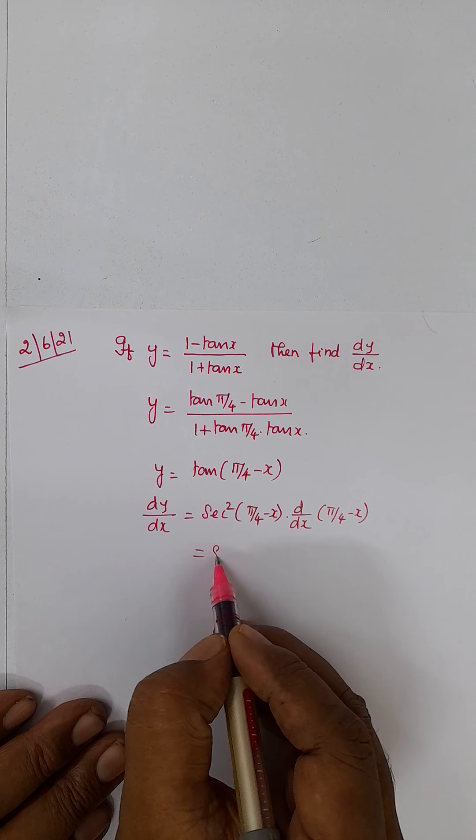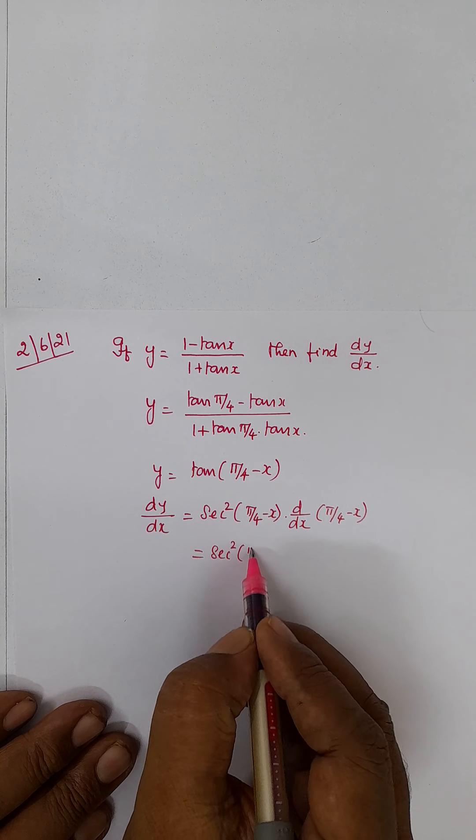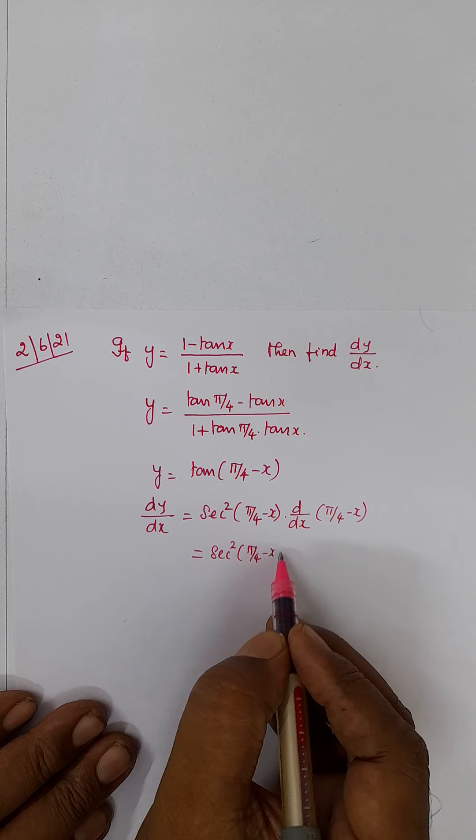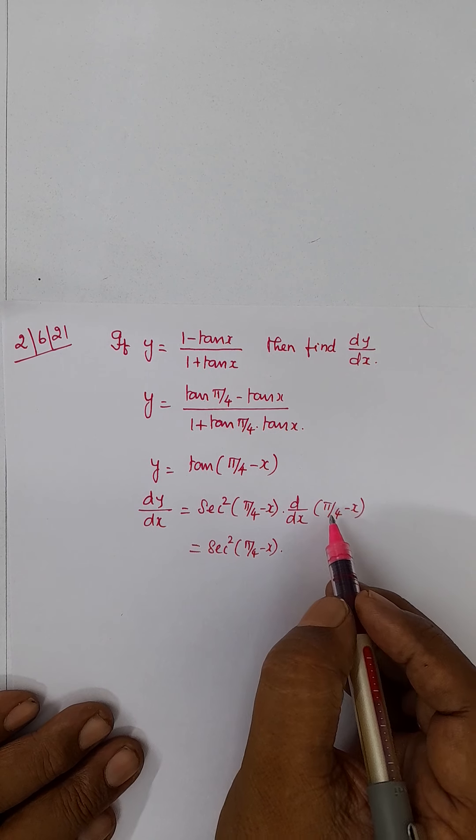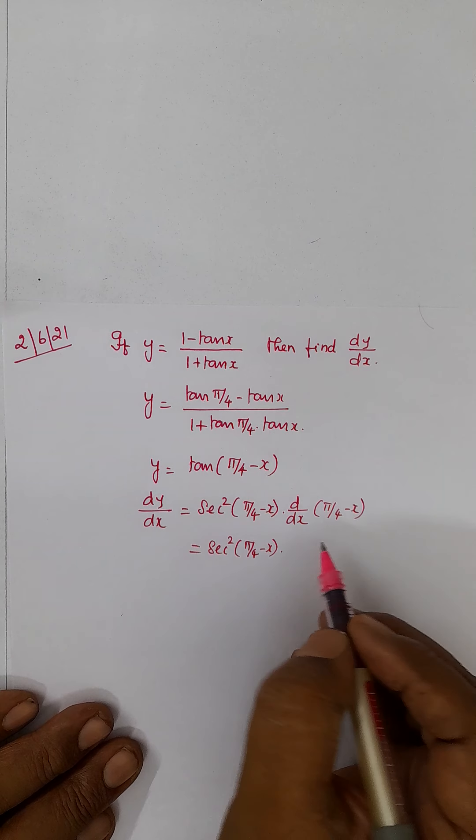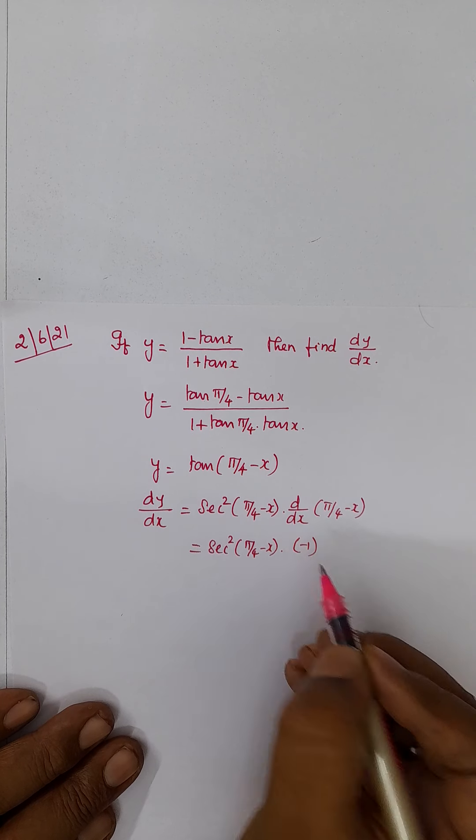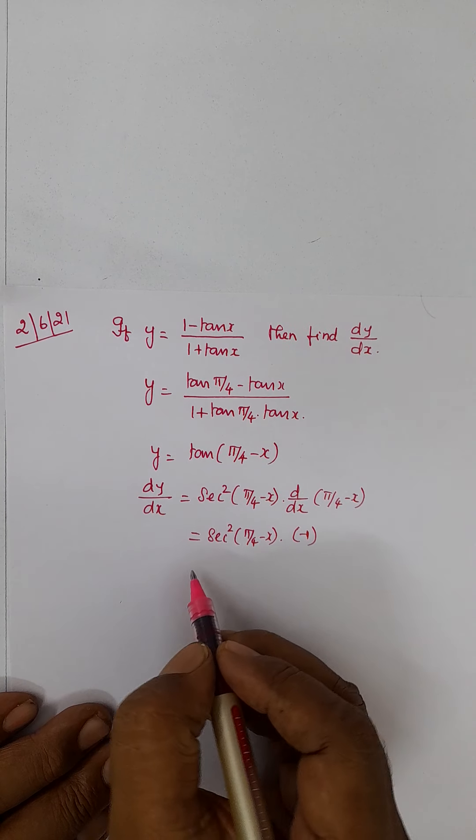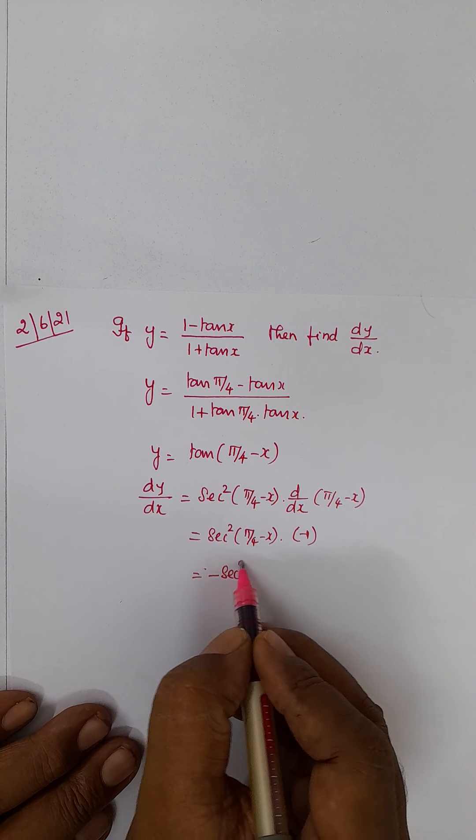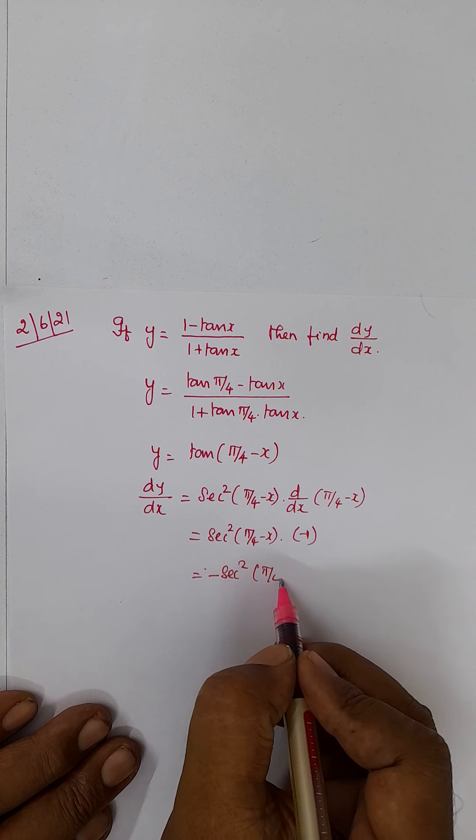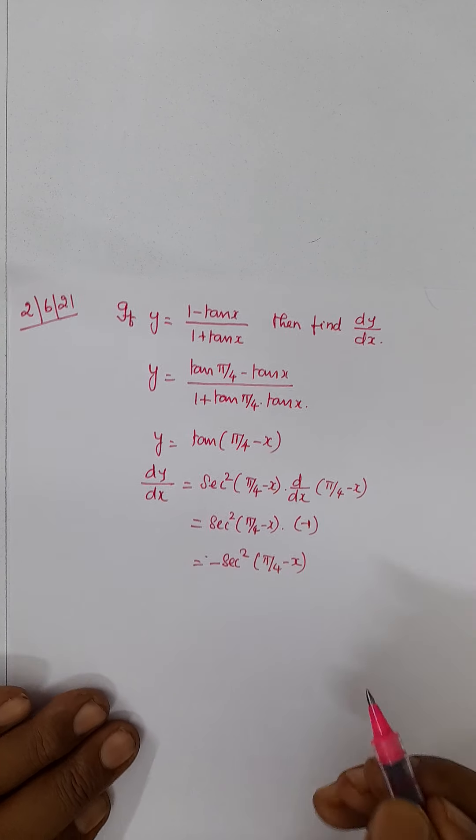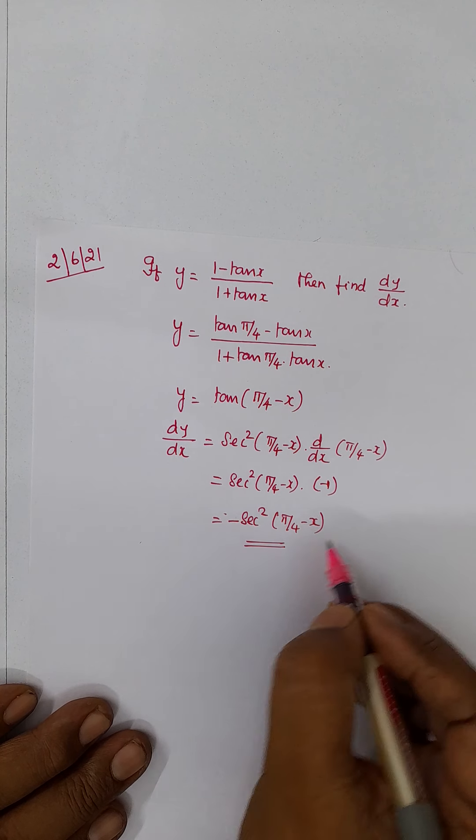Doing this, you get secant squared pi by 4 minus x into d by dx of pi by 4 is 0 minus d by dx of x is 1. So, you get minus 1. Put it in bracket minus 1. Final answer is minus secant squared pi by 4 minus x. This is your final answer.